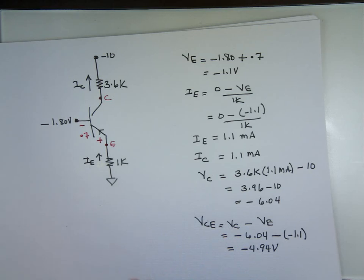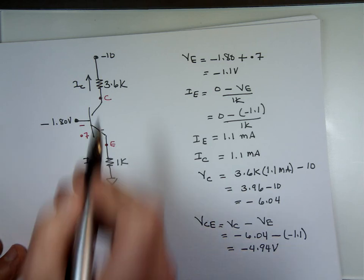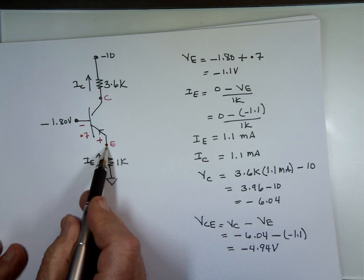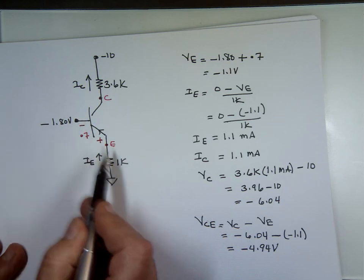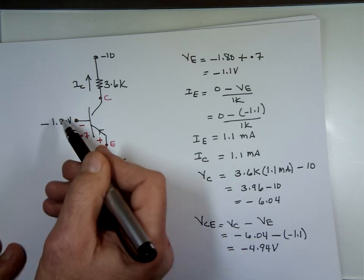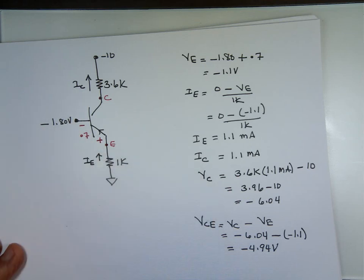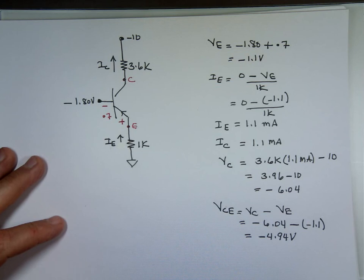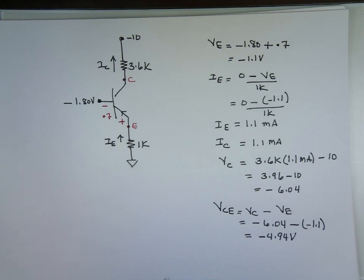Notice that for a PNP transistor, the current is going in, going up, and coming out. The emitter voltage is actually higher than the base voltage — the reverse of NPN — because you want the current to go in. In the next video, I'm going to mix and match different problems, go through various circuits, and show you what will happen.